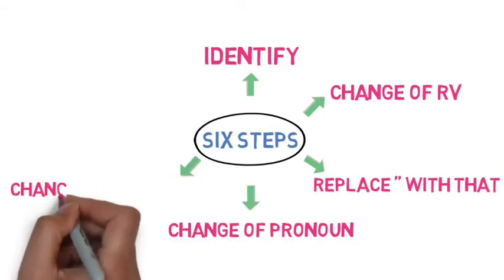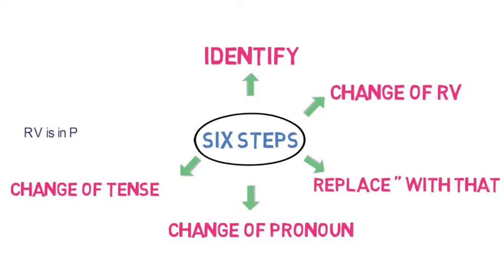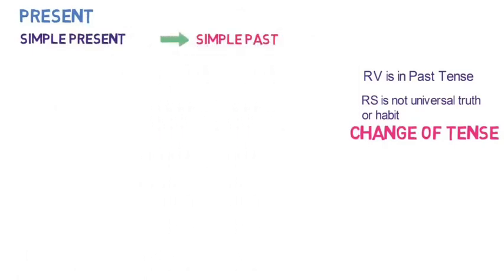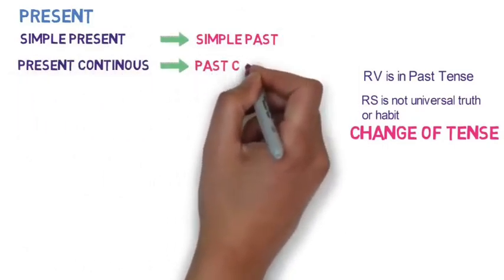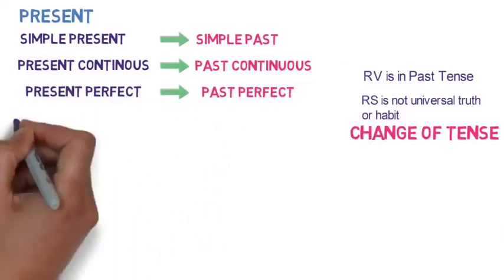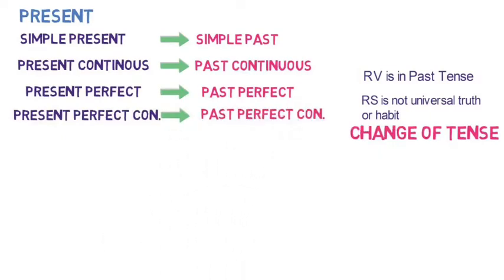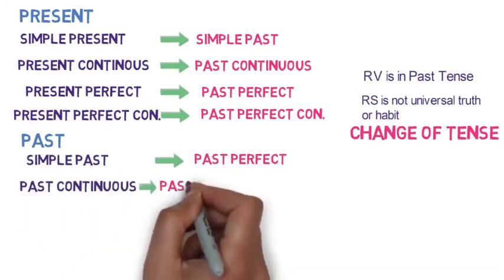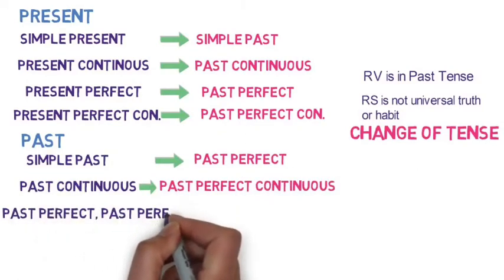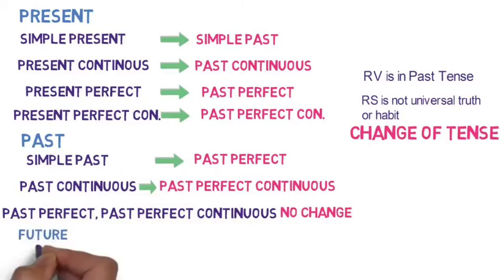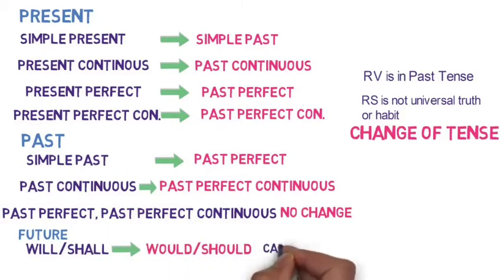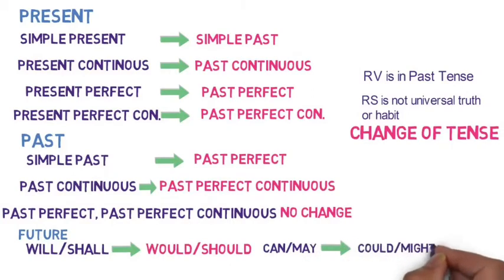The fifth step is change of tense. It will happen when the reporting verb is in past form and the reported speech is not a universal truth or habit. The changes are: simple present converts to simple past; present continuous to past continuous; present perfect to past perfect; present perfect continuous to past perfect continuous. For past tenses: simple past converts to past perfect; past continuous to past perfect continuous; past perfect and past perfect continuous won't change. For future tenses: 'will' or 'shall' will be replaced by 'would' or 'should,' and modal verbs 'can' or 'may' will convert to 'could' or 'might.'